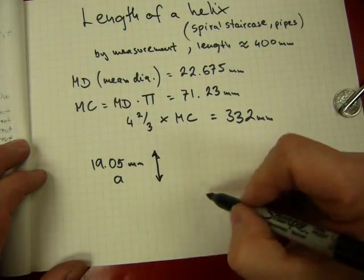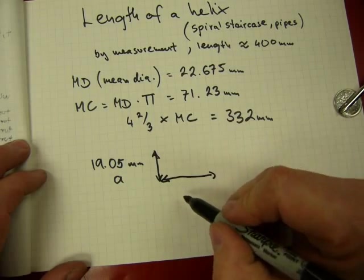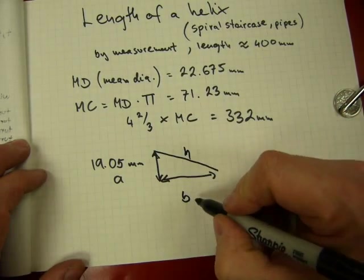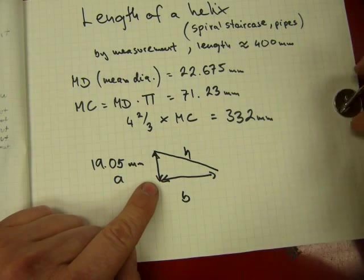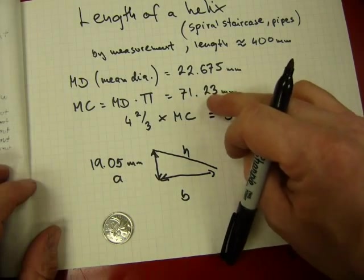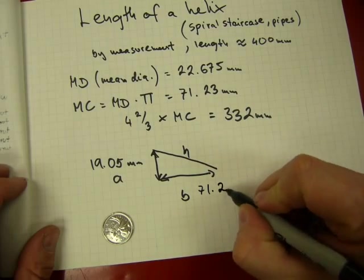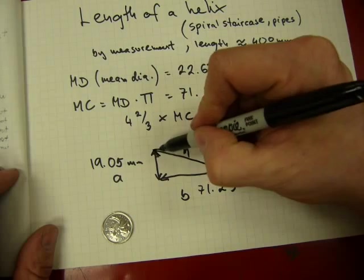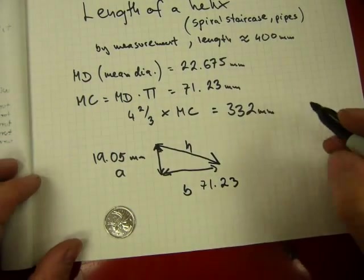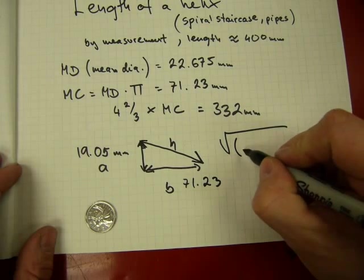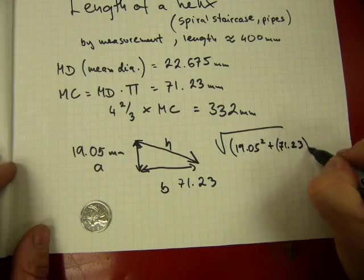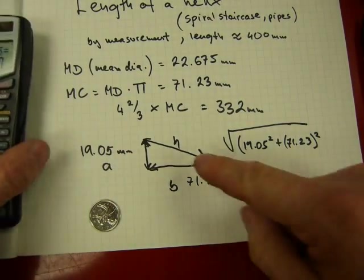You can call it side B, it doesn't matter on a triangle which one is A and which one is B, as long as this one is the hypotenuse. This B side was the same as the mean circumference of the coil, and that number was 71.23 millimeters. So we can calculate the amount of wire, the length of wire that runs along the hypotenuse if we do an a square, b square, c square on it. In other words, take the square root of 19.05 squared plus 71.23 squared. What you get is the length of wire for one turn.